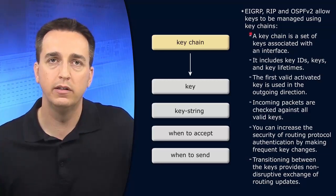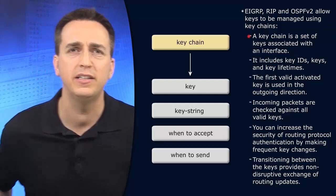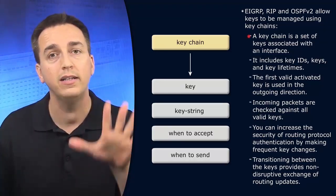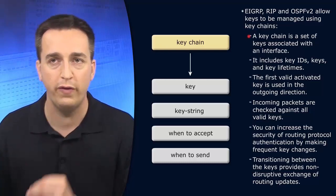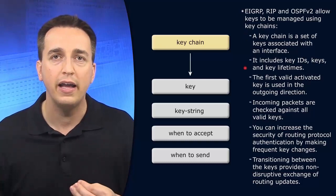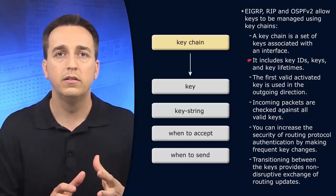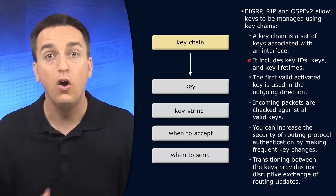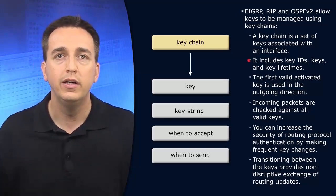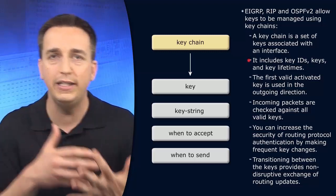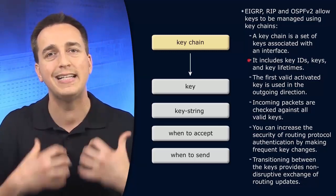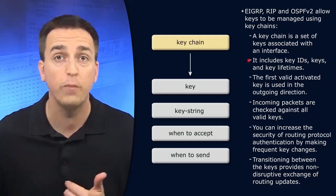So what is a key chain? A key chain is a set of keys associated with an interface. We are going to assign the key chain to an interface, and inside that key chain it will identify keys that can be utilized for the authentication process. Inside these keys, we find the key strings and the key lifetimes — all the information necessary to perform the authentication.